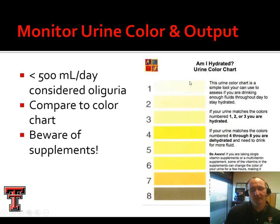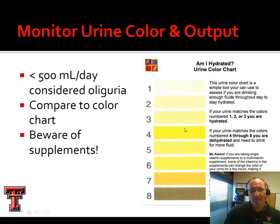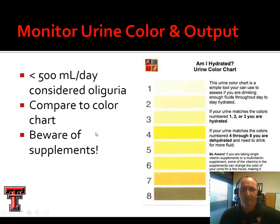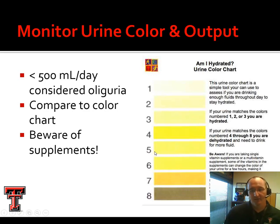Urine color charts should be posted over urinals and on bathroom stalls so athletes can monitor their hydration status. Colors 4 through 8 on the chart indicate dehydration — the darker yellow color means waste products in the urine are more concentrated. Straw-colored or clear urine indicates adequate hydration. Beware of supplements, which can totally throw off the color — urine may turn green or orange — so if an athlete claims a darker color, ask if they're taking any supplements.